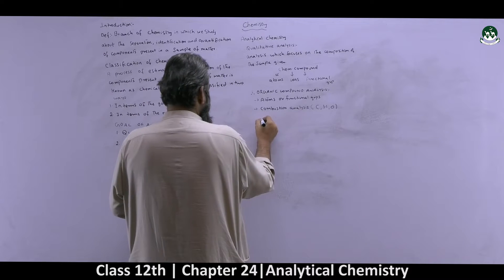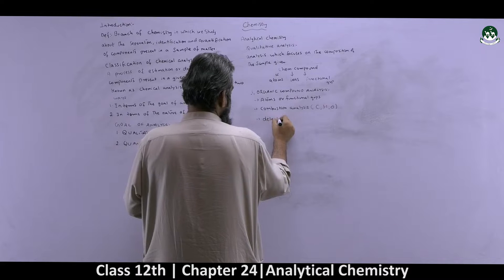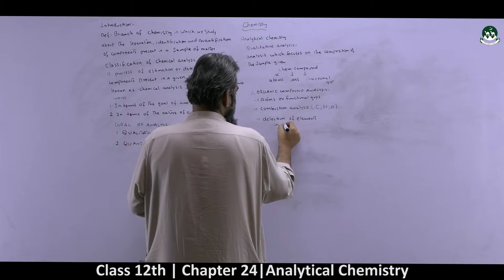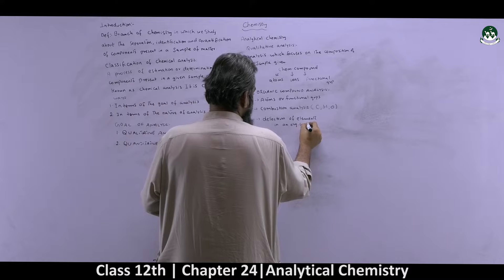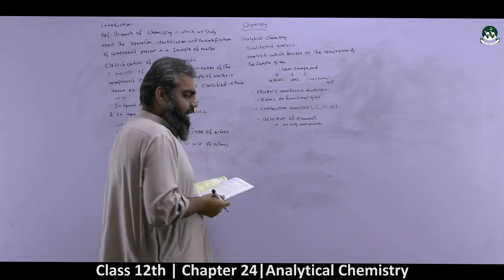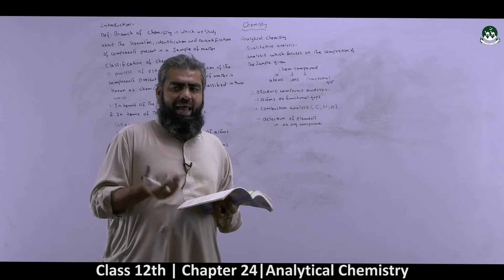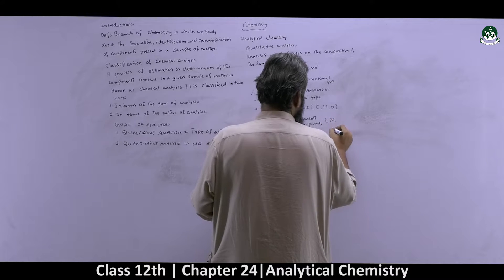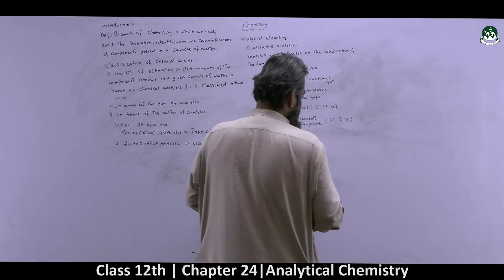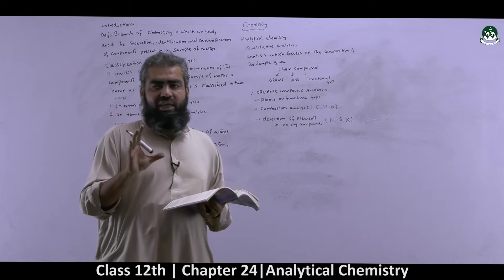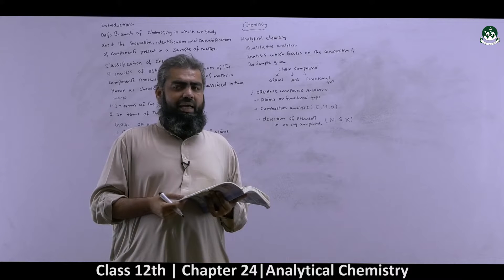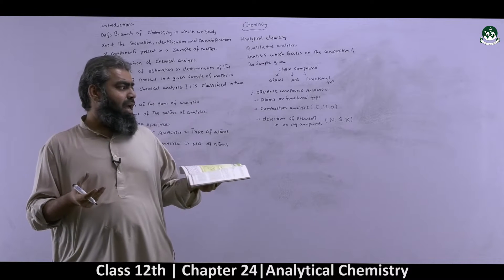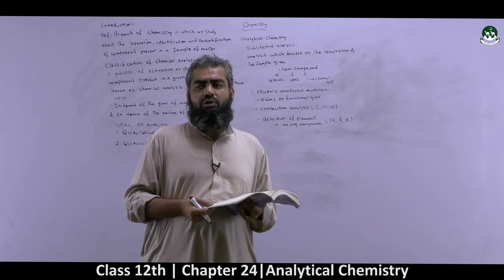The second method is detection of elements in an organic compound. We have studied this in introduction to organic chemistry, where we detect nitrogen, sulfur, and halogens — these three elements. We prepared Lassaigne's solution, and from it we found out the presence of nitrogen, sulfur, or halogens in an organic compound.